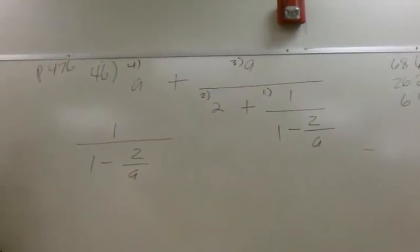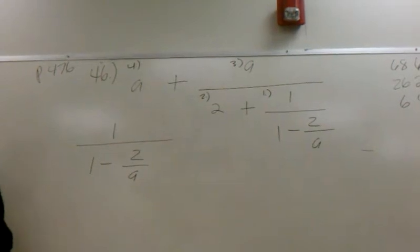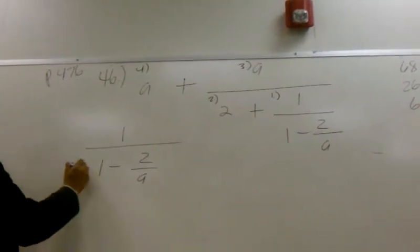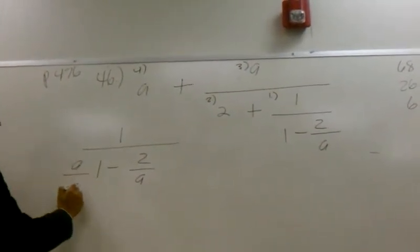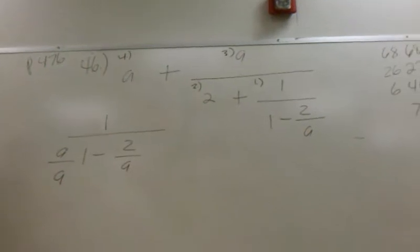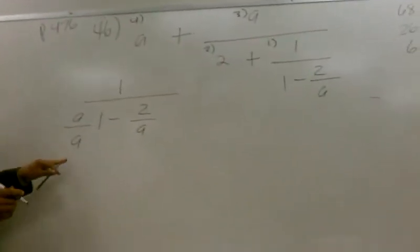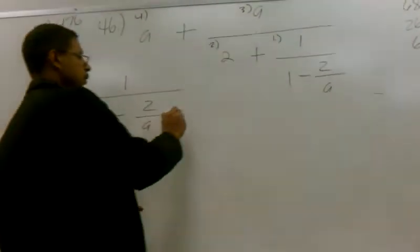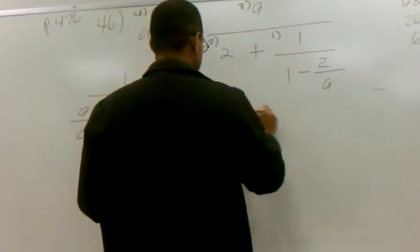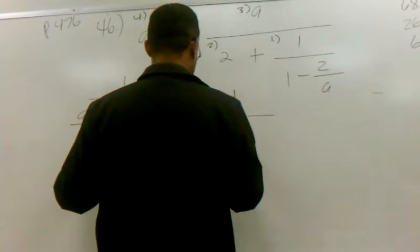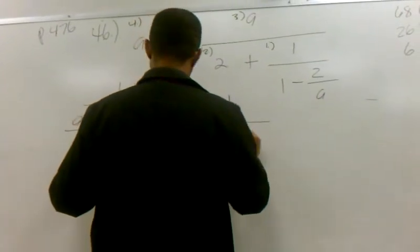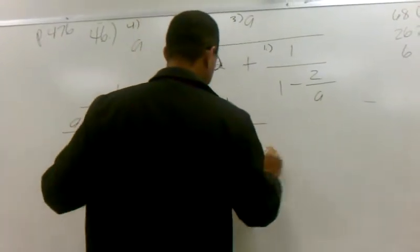A. So we're going to take the 1 and multiply it by a over a. So now when I do that, I'm going to rewrite it as 1 divided by a minus 2 over a.